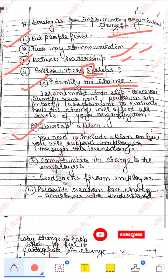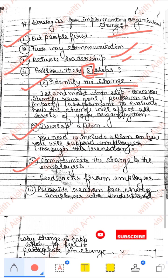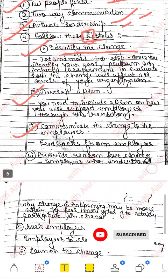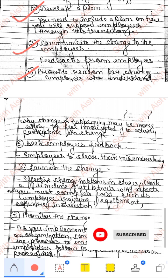In the 8 steps: pehle cheezein dekho, fir develop a plan — us according plan banao ki kitne employees chahiye, unka support chahiye. For example, agar technology computer par kaam karna hai toh kitne log chahiye, kitne computers chahiye — ye plan bana lo. Fir communicate the change to the employees — apne employees ke saath us cheez ke baare mein baat karo, proper communication karo. Then fourth — provide the reason for the change — apne employees ko batao ki kyun change chahiye, kyun computers chahiye, because technology badh rahi hai. Jo employee us cheez ko samajh jaayega, woh easily is change ko accept kar lega.